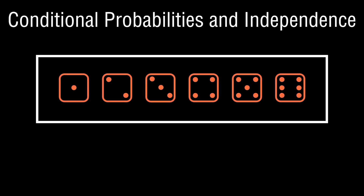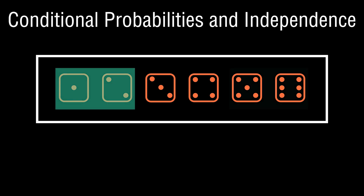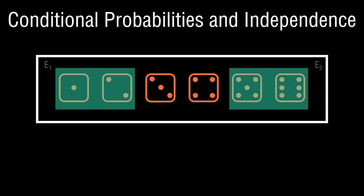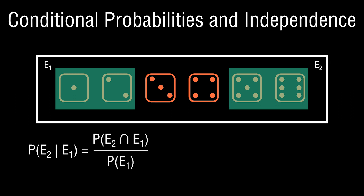Let's go back to the die example. We've defined two events: E1 as the outcome one or two, and E2 as the outcome five or six. What is the conditional probability of E2 given E1? The answer is zero — because the joint occurrence of these two mutually exclusive events is impossible. So if you're given that E1 occurred — a one or two was rolled — there is absolutely no probability of a joint occurrence with E2. The probability of E2 shifts from its original one-third to zero, given the occurrence of event one.